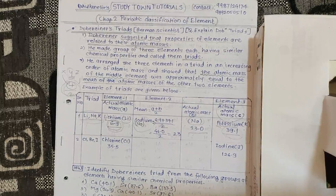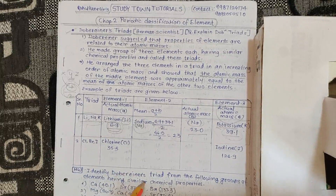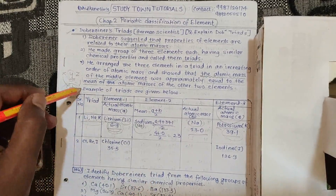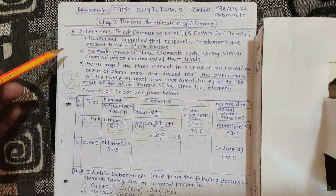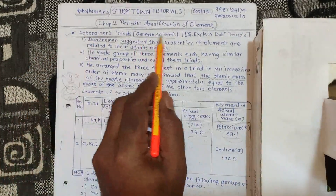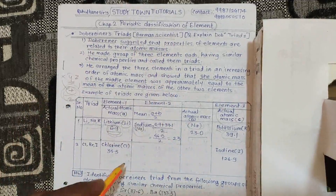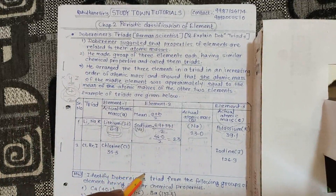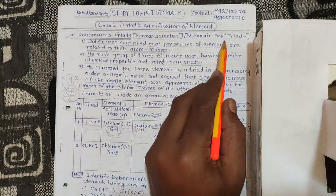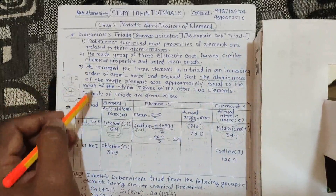Most of the basic information and latest information about the elements we have already covered in our basic introduction. So for this we will directly go to the question, that is Döbereiner's Triad. Döbereiner was a German scientist — an ancient scientist — who made a theory and triad knowledge. We will check it first.